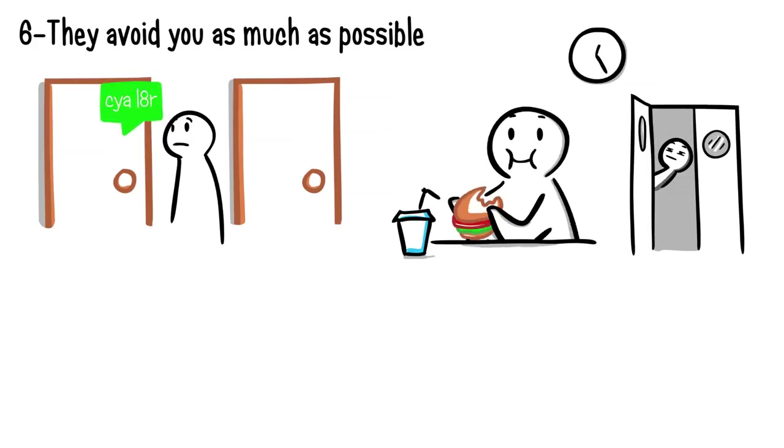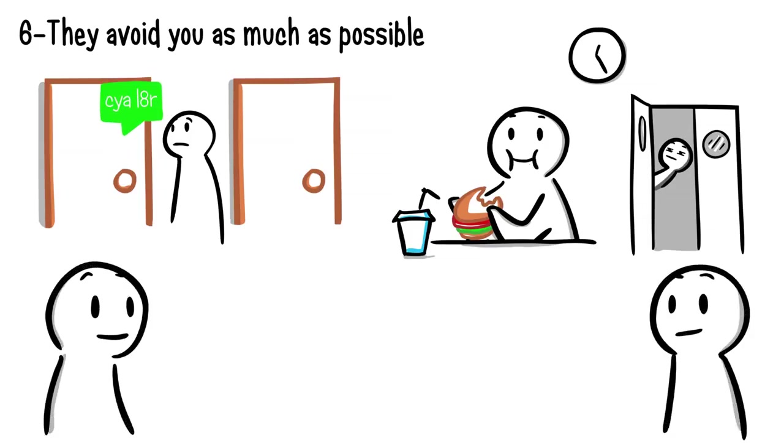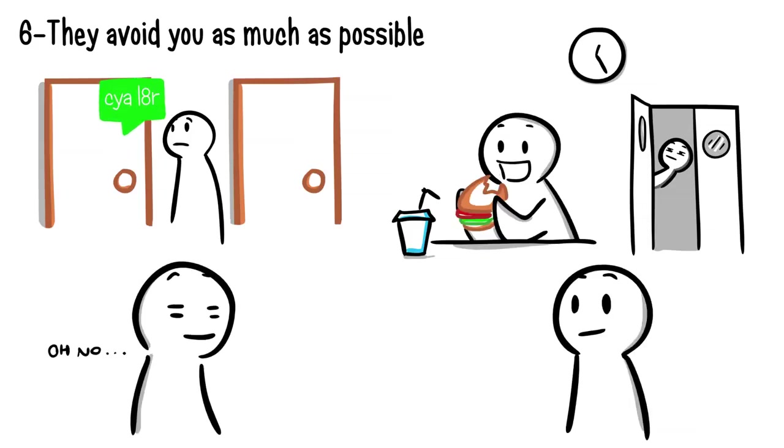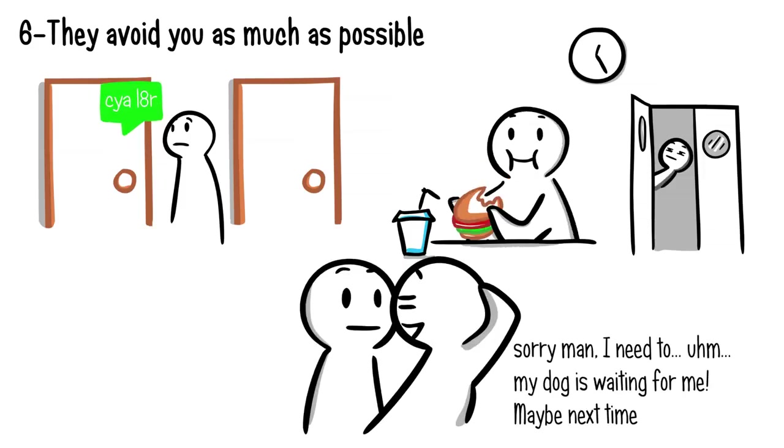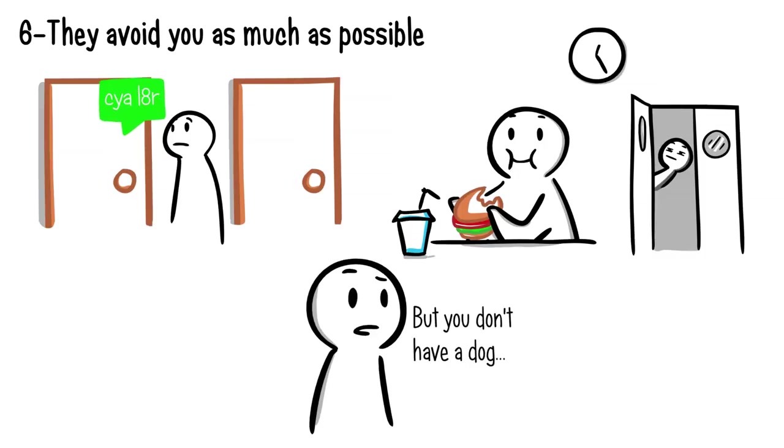It's especially a sign if they find out your schedule just to avoid you during your lunch hours or time you need to occupy the same space. And when you do end up bumping into one another, they'll always have an excuse ready at hand to avoid seeing you again.